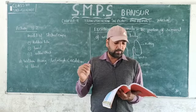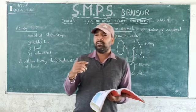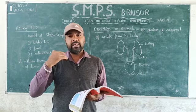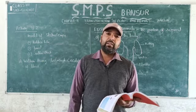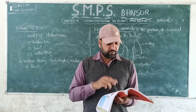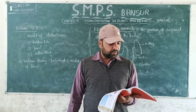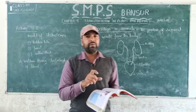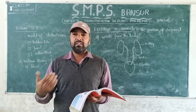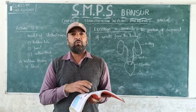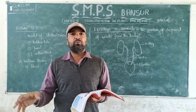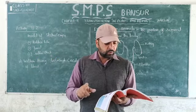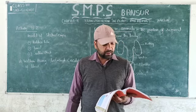Recall how carbon dioxide is removed as waste from the body through the lungs during exhalation — the exchange of gases takes place at the alveolar surface and carbon dioxide goes out into the atmosphere. Also recall that undigested food is removed during ejection. Carbon dioxide is waste, and undigested food is also waste — food that is not absorbed is removed from the body by the process of ejection. Let us now find out how other waste materials are removed from the body.